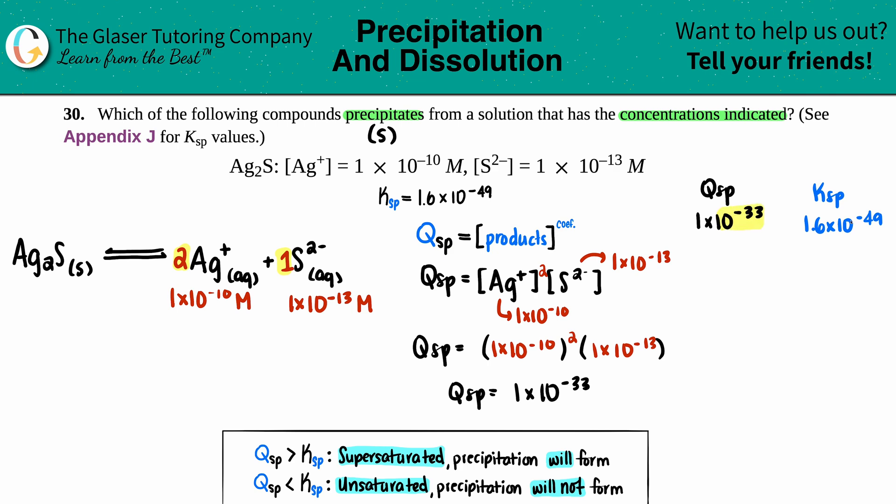Always go for those exponents first. These are different, so you don't even have to look at the values in the front. Just go by which of these exponents is greater: -33 versus -49. A -33 is greater than -49 on a number line, so that means the Qsp is greater than the Ksp.